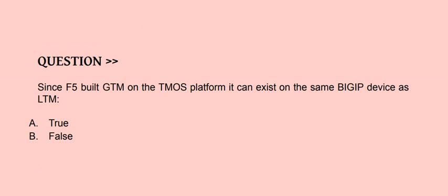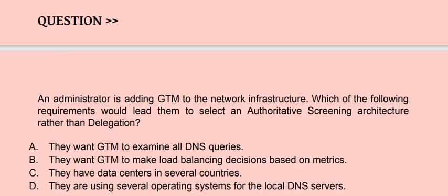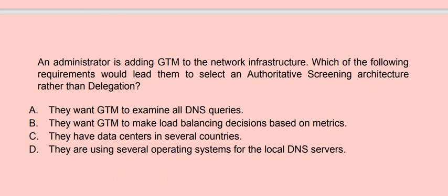Next question: an administrator is adding GTM to the network infrastructure. Which of the following requirements would lead them to select an authoritative screening architecture rather than delegation? Option A: they want GTM to examine all DNS queries. Option B: they want GTM to make load balancing decisions based on metrics. Option C: they have data centers in several countries. Option D: they are using several operating systems for the local DNS servers. The correct answer is Option C.